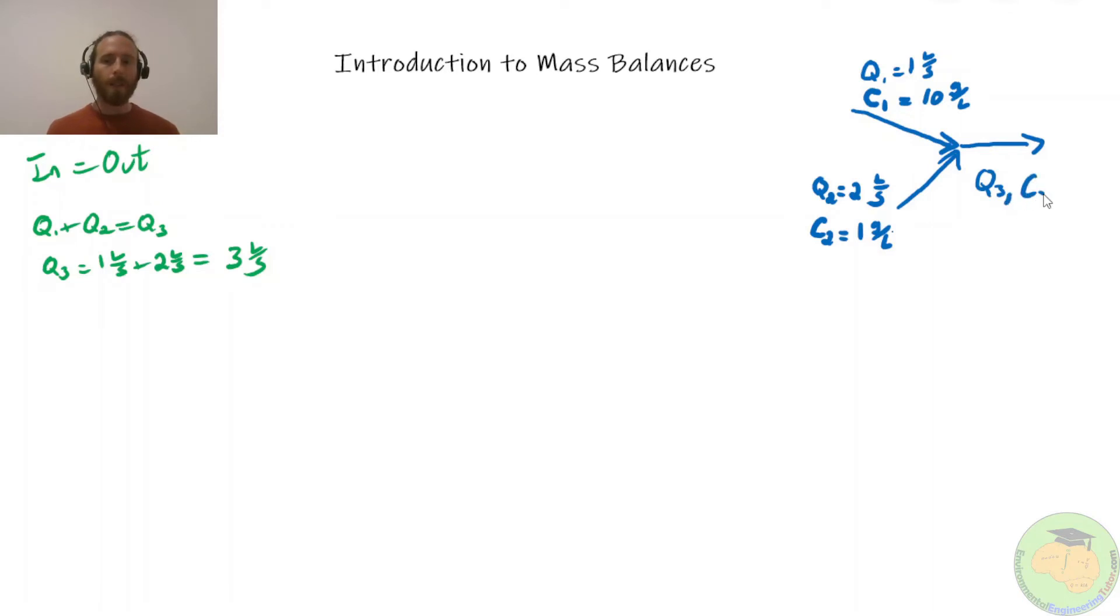So all this to solve the problem, what is c3? Well, we're going to take that same approach. In equals out. And to get the mass in now, so first we're just looking at the flow rates. But when we multiply a flow rate times concentration, our liters are going to cancel out. And that's going to leave us with units of grams per second. That's going to be a mass flow rate.